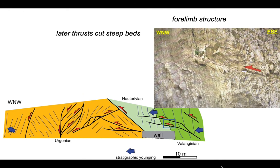Finally, here's a fault structure that cuts the steep beds in the older part of the Cretaceous succession — the Valanginian limestones — thrusting towards the west-northwest but cutting already-steepened beds. So we've got a history here that we can recognise from cross-cutting relationships and the relationships of the thrusts to the bedding and the rotations of the bedding. We can build a story for structural evolution that's general to these fold structures, and it works for this structure as well as the frontal structure that we started looking at.